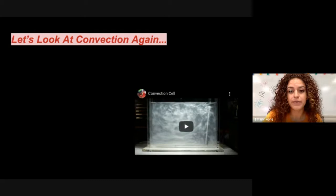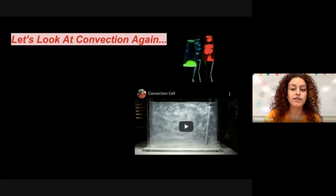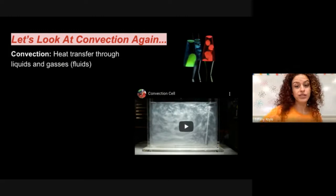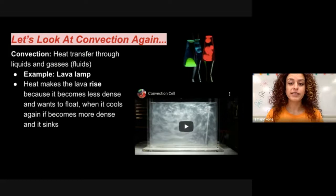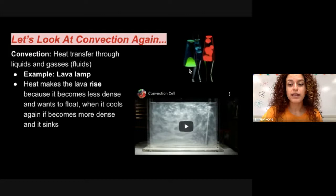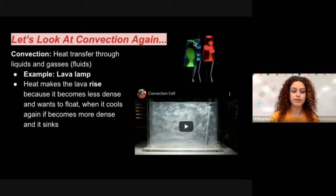So looking specifically at convection, let's check it out. I'm sure you all have seen lava lamps before, and lava lamps are a perfect example of convection. Have you ever wondered why the lava inside the lava lamp rises? Why it falls? That is because of convection. Looking at this example of the lava lamp, the heat makes the lava rise because it becomes less dense and wants to float. When the lava cools down again, it becomes more dense and it sinks. So there's a little heater on the bottom of a lava lamp, and it heats up the lava that's sitting at the bottom. Once that lava is heated up, it rises to the top, forcing the lava that's cooled down at the top to then sink down to the bottom.